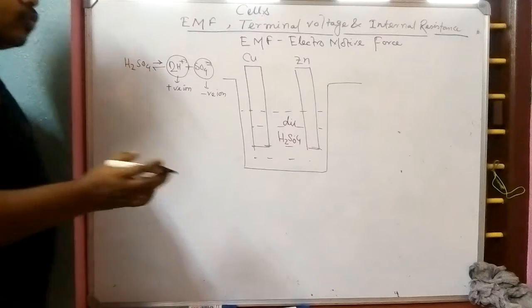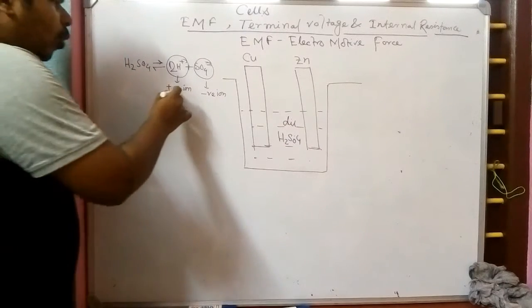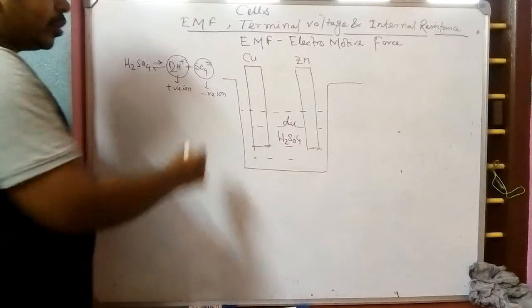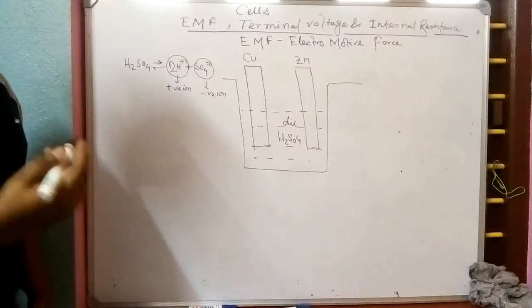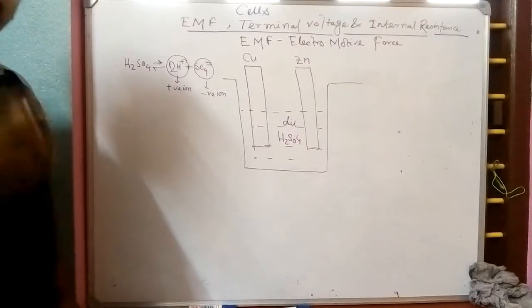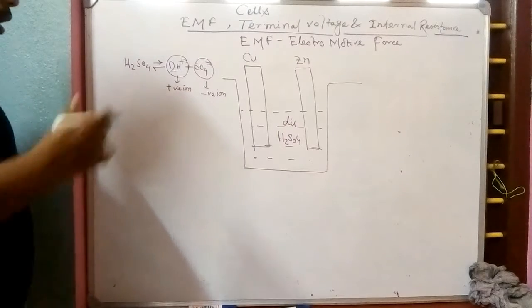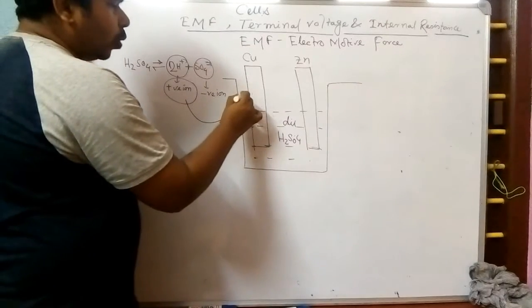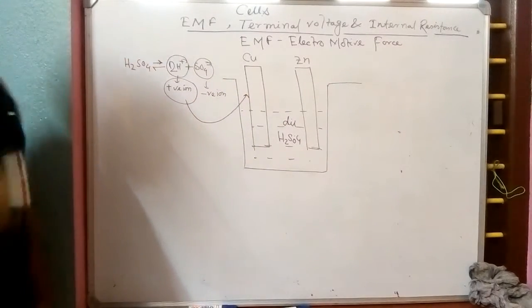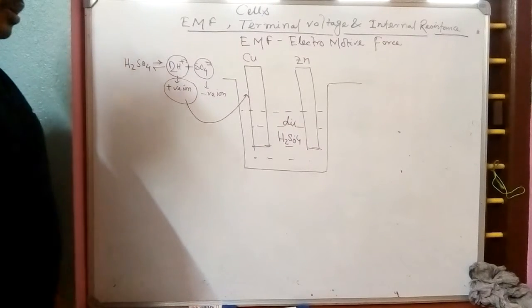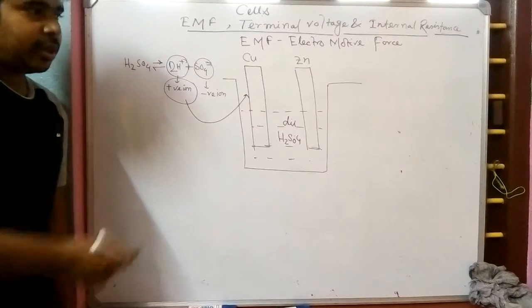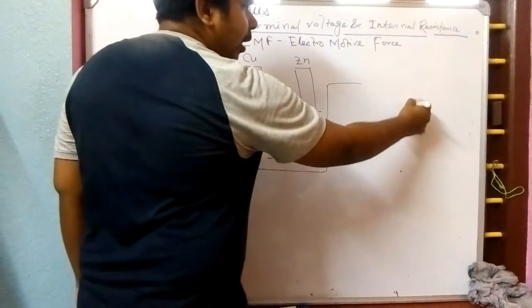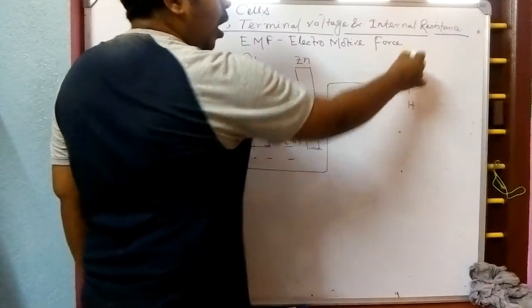We have taken two electrodes — one copper and one zinc. In which electrode the positive ion goes, that becomes the anode; where the negative ion goes, that becomes the cathode. From the activity series in chemistry, hydrogen is in the middle; elements above hydrogen in the activity series get the positive electrode, and those below act as the negative electrode. The H⁺ positive ions generally go to copper.